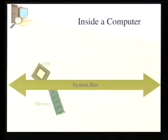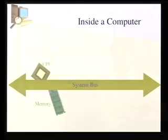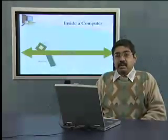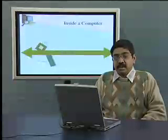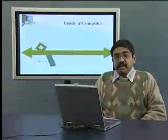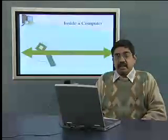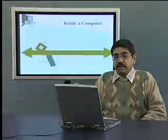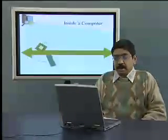The two most important components are the CPU and the memory. The CPU stands for Central Processing Unit and it is this circuit which executes and understands all programs that the computer executes. The memory stores all data that is needed to run these programs. We will look at some details of the memory and the CPU shortly.